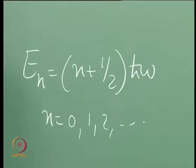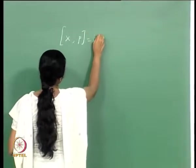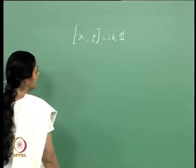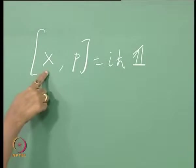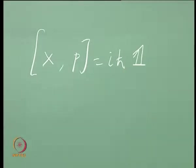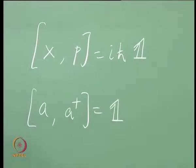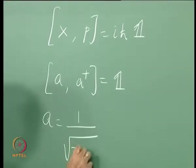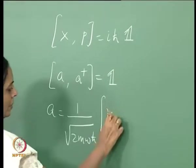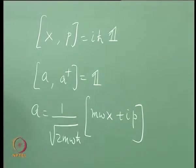We started with the commutation relation: the commutator of x with p was i h-bar times the identity operator, where x, p, and the identity are all operators. This translated to [a, a†] = identity, where a itself was defined in terms of x and p as linear combinations, and a-dagger was the Hermitian conjugate of a.